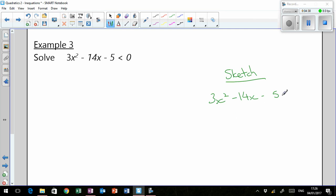That factorizes, we want to know when that's equal to zero. That factorizes to three x plus one and x minus five. So x equals negative one third, and x equals five.